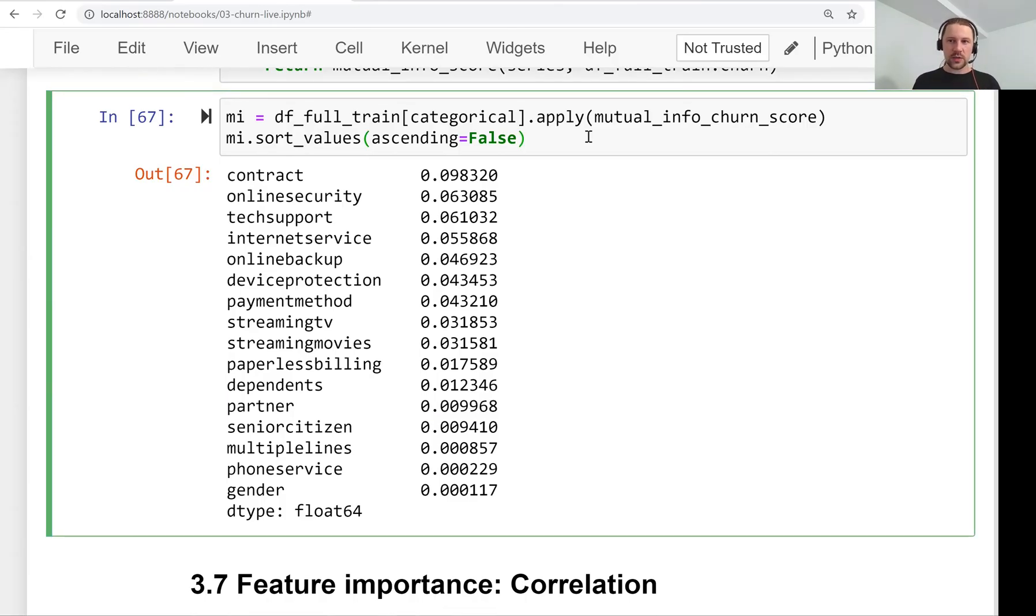So now we actually understand which variables are very useful for us and which are less useful by looking at this mutual information score. Variables like these have very high scores, and we're really interested in these variables.